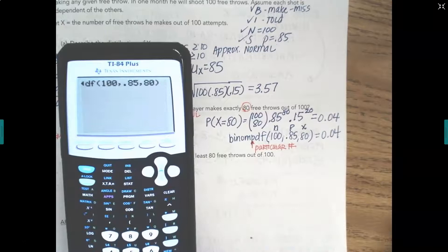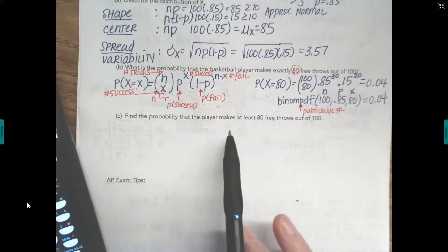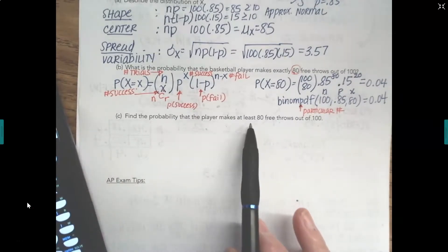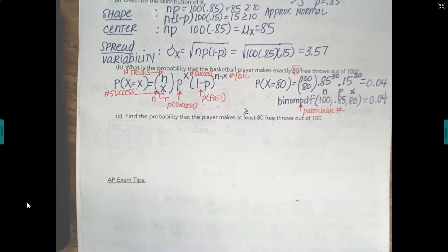So that's if you're looking for a particular number, but sometimes they ask for a range of numbers. And if they ask for a range of numbers, like in our question here, find the probability that the player makes at least 80 free throws. At least means greater than or equal to.